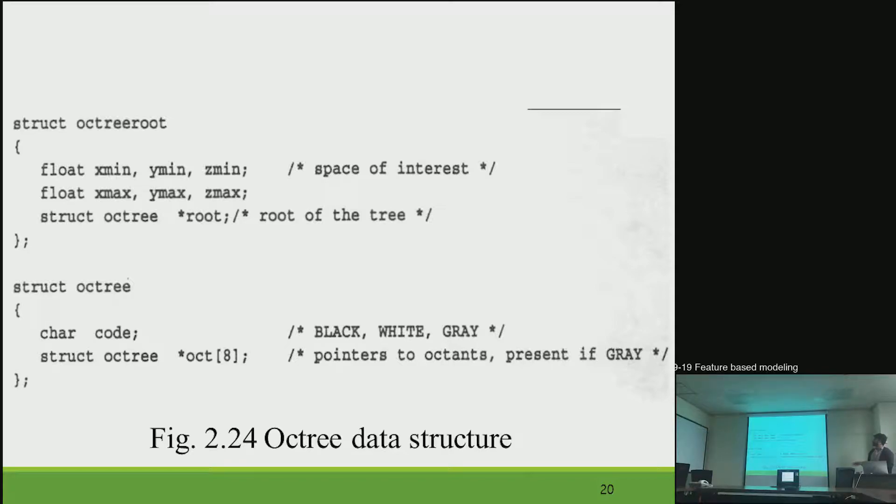This figure shows how to deal with that data structure of octree. When applied to the solid modeling, octrees are typically constructed from solid primitives such as blocks, cylinders, and spheres.